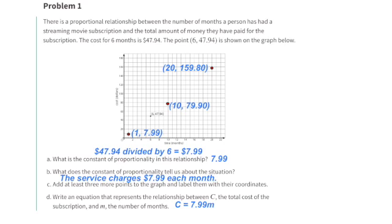Part C: Add at least 3 more points to the graph and label them with their coordinates. (1, $7.99), (10, $79.90), and (20, $159.80).